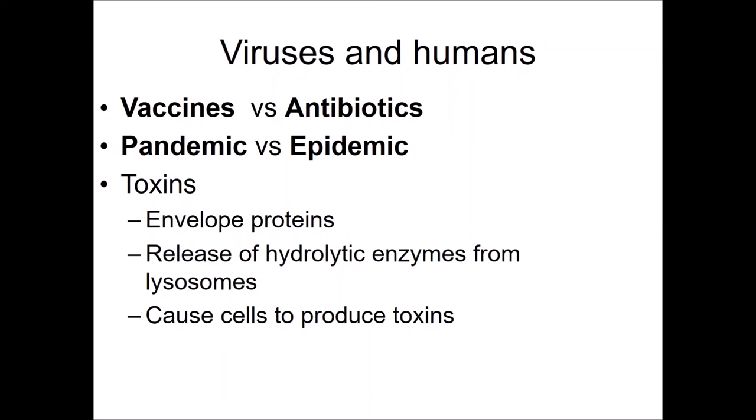Antibiotics are not effective against viruses — they target bacteria and kill bacteria already living in your body. They cannot be used to prime your immune system like vaccines can. Overuse of antibiotics can select for antibiotic-resistant bacteria. Evolutionary biologists have figured out some ways to keep antibiotics more effective.